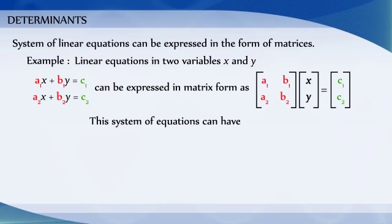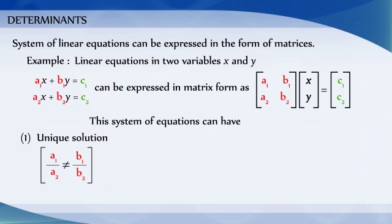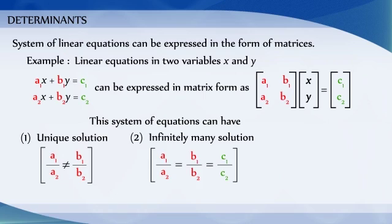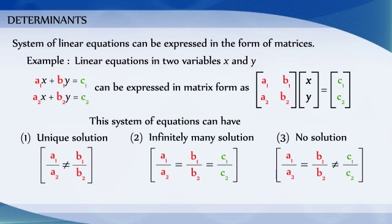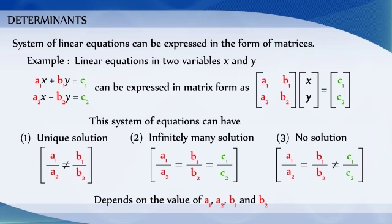This system of equations can have one unique solution if a1/a2 is not equal to b1/b2. It may have infinitely many solutions if a1/a2 is equal to b1/b2 is equal to c1/c2, or no solution if a1/a2 is equal to b1/b2 but not equal to c1/c2. This depends on the values of a1, a2, b1, b2.